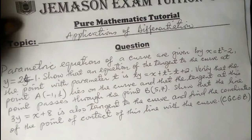Today we focus on applications of differentiation. The question gives parametric equations of a curve: x equals t squared minus 2, y equals 2t minus 1. We must show that the equation of the tangent to the curve at the point with parameter t is ty equals x plus t squared minus t plus 2, verify that point A with coordinates negative 1, 1 lies on the curve, and that the tangent at this point passes through point B with coordinates 5, 7.